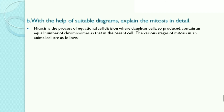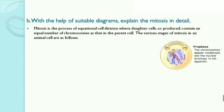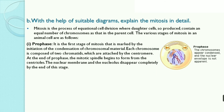Second, with the help of suitable diagrams, explain mitosis in detail. Mitosis is the process of equational cell division where daughter cells produced contain an equal number of chromosomes as the parent cell. The first stage of mitosis is prophase: it is marked by initiation of condensation of chromosomal material. Each chromosome is composed of two chromatids attached by the centromere. The mitotic spindle begins to form; the nuclear membrane and nucleolus disappear completely by the end of this stage.